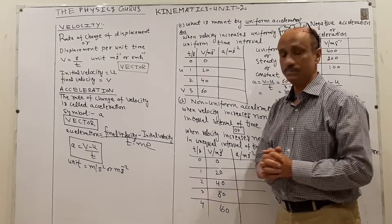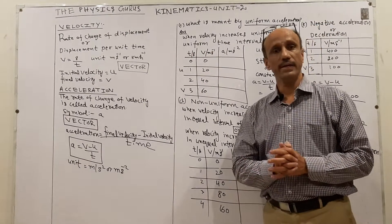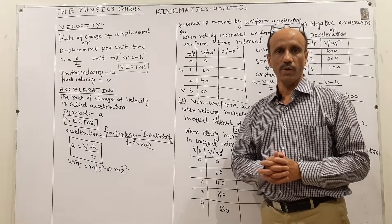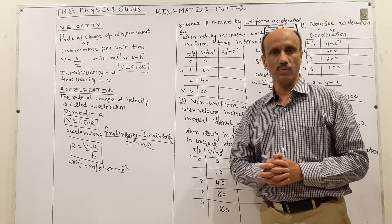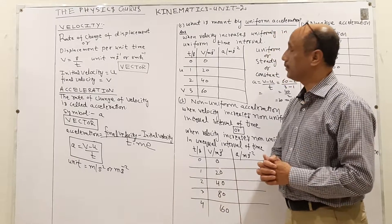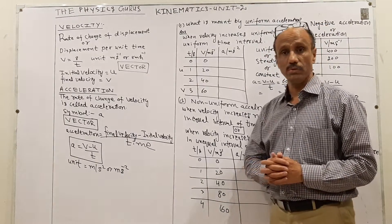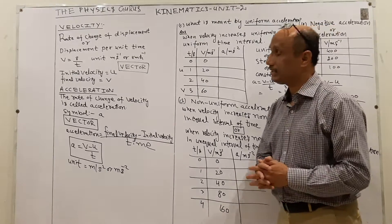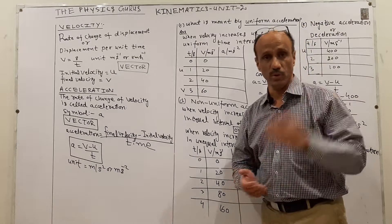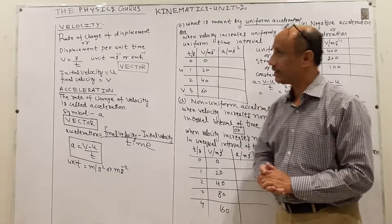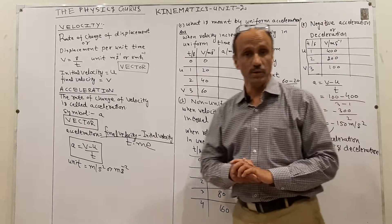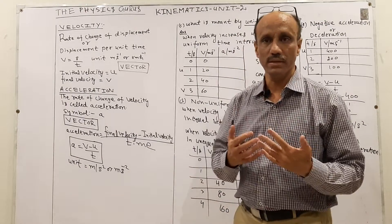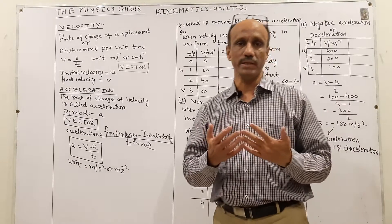We will study O-level physics 5054, unit number 2, kinematics. The next learning objective is: what is meant by velocity? As you already know, displacement is a vector quantity, and that is in a particular direction.